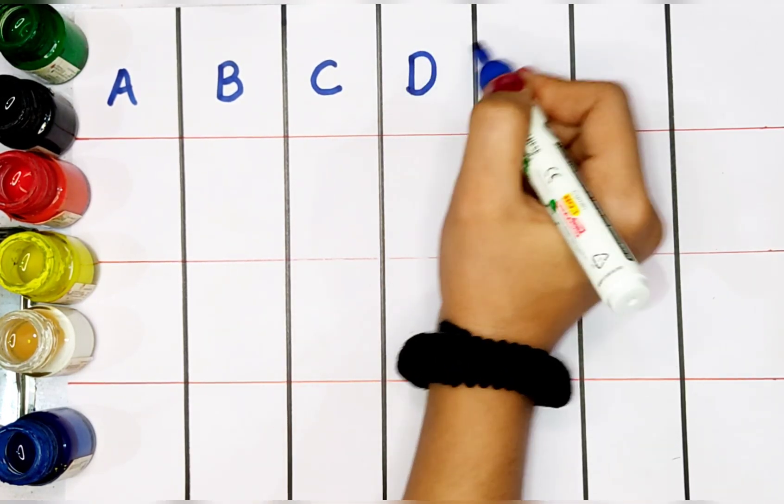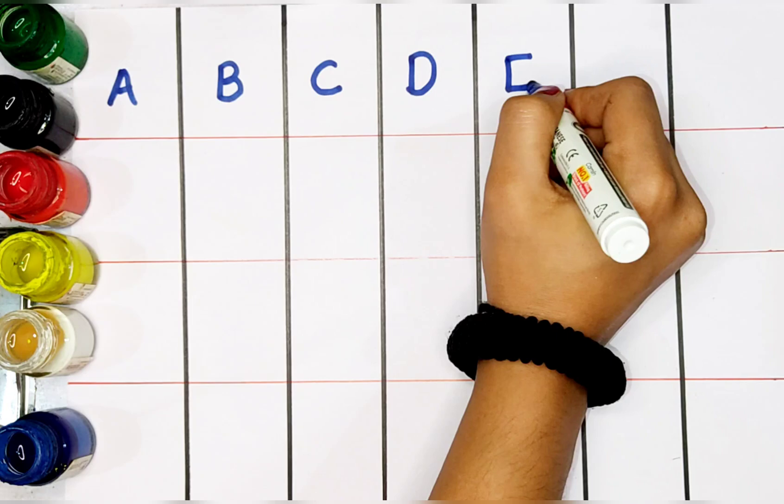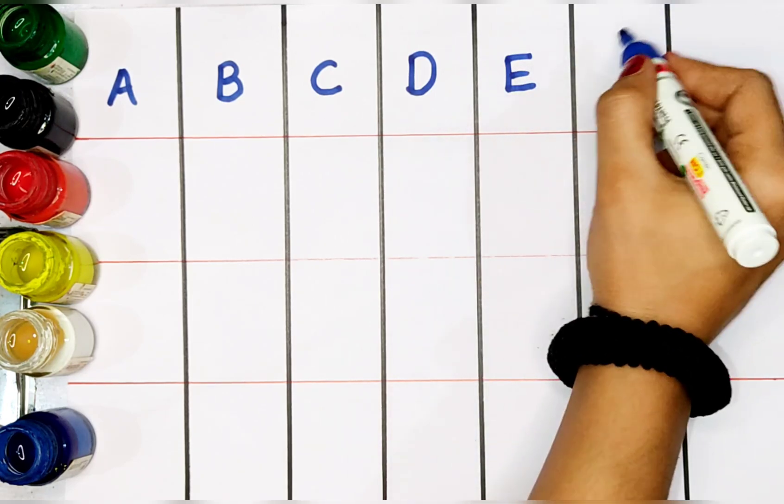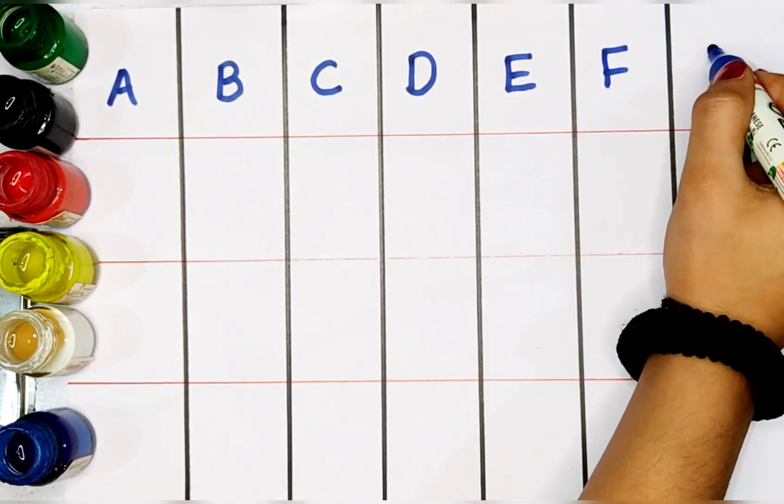D. D for dog. E. E for elephant. F. F for fish.